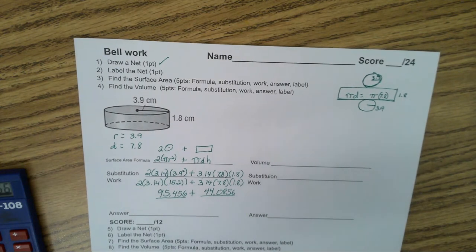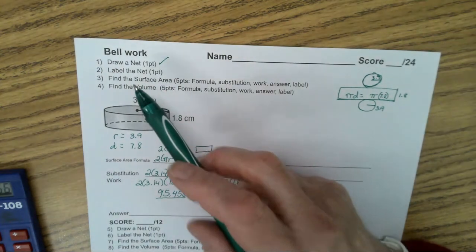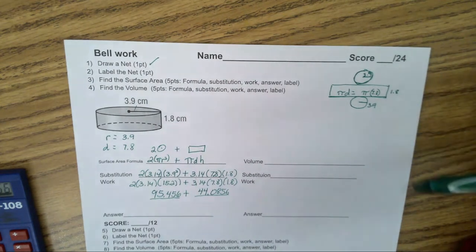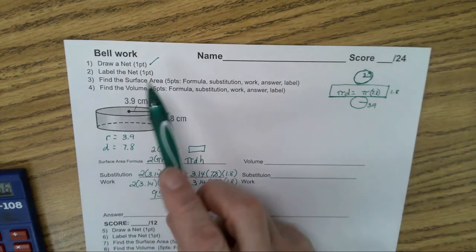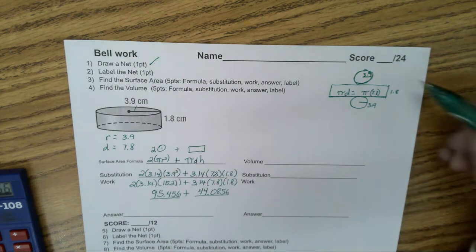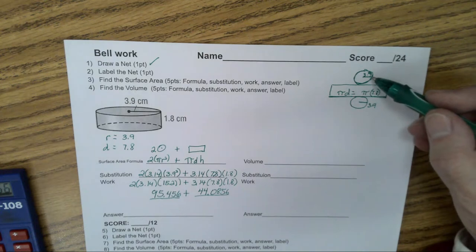The first thing we did was we drew our net. Here is an example of our net over here. Two circles and a rectangle in between. Then we had to label the net. The radius of each circle is 3.9,